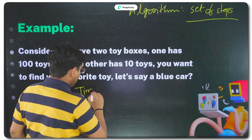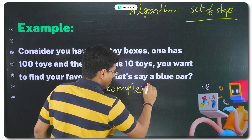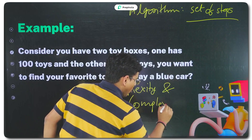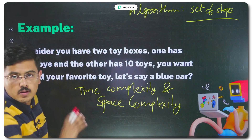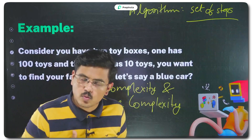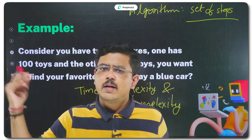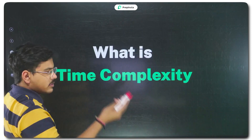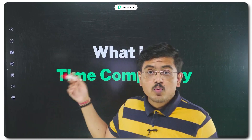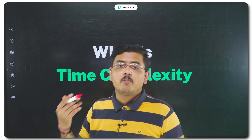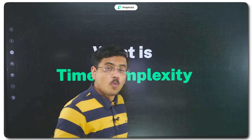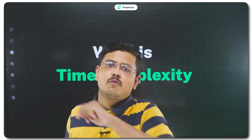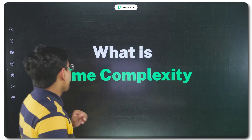In analysis of algorithm we are concerned about two things: time complexity and space complexity. In this video we will understand time complexity, and in upcoming videos we will understand space complexity. What is time complexity? You should start noting these things down because they are very important from an interview perspective — for example, if somebody asks you what is an algorithm and you tell them 'a set of steps followed to solve a problem,' they will be absolutely impressed by your clarity of thought.